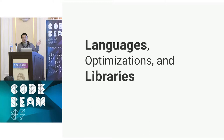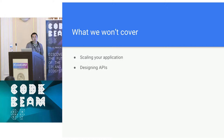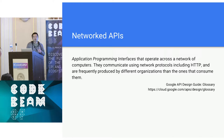Today we're really going to focus on the intersection of languages and libraries. First we'll describe the problem we're trying to solve. We'll look at four case studies on how we've attempted to solve this in the past and how we currently are. Finally, we'll talk about some stuff you can do as API producers. We're not going to cover how to scale your individual application or design a single API — we're really going to focus on building client libraries to consume those APIs.